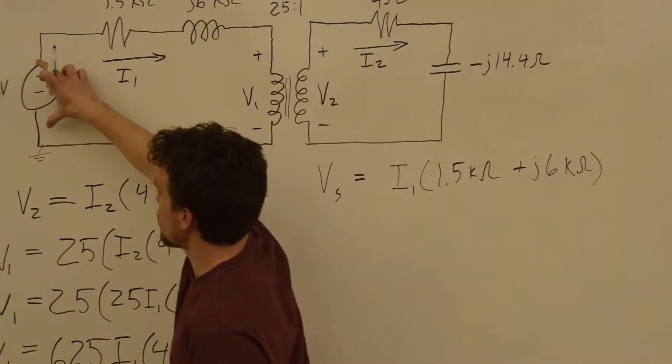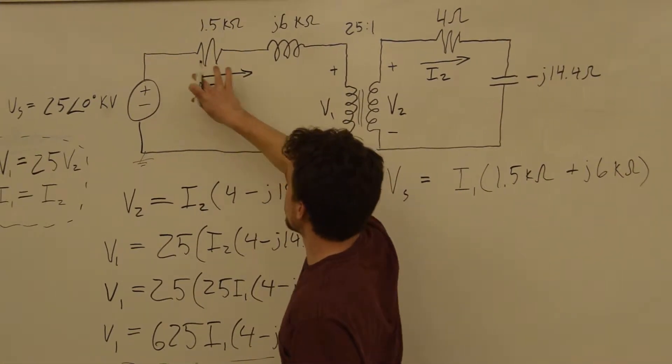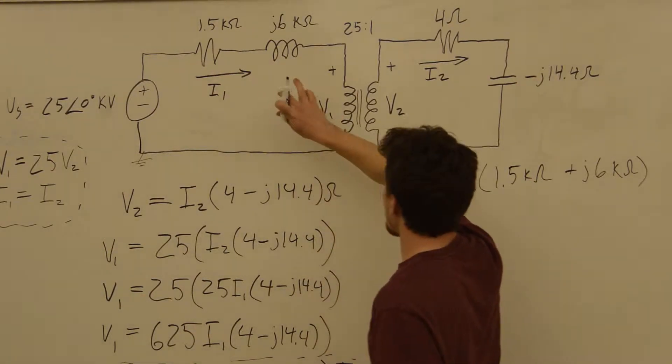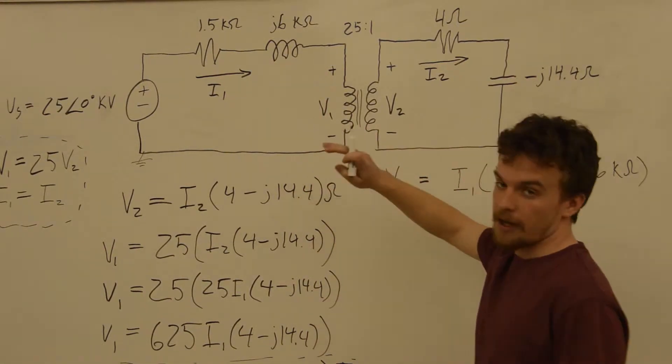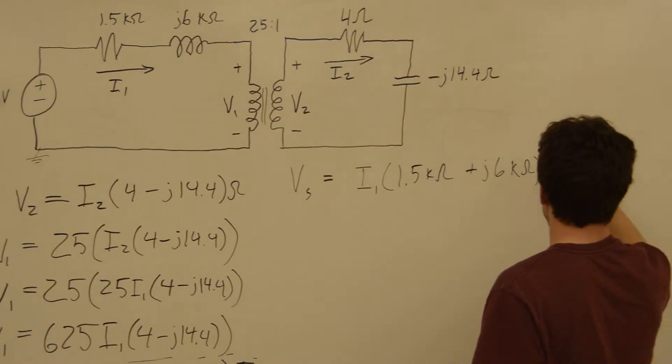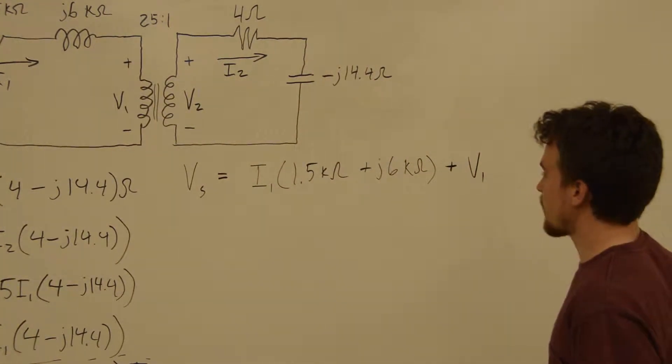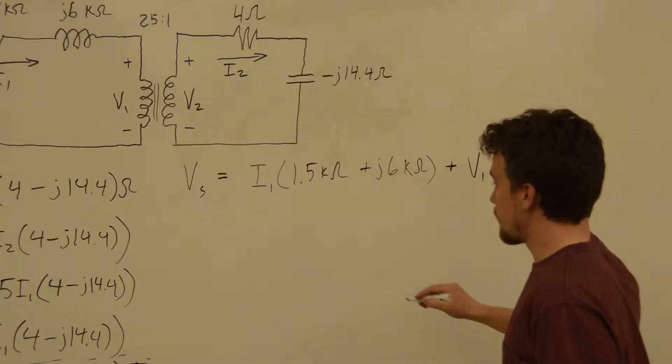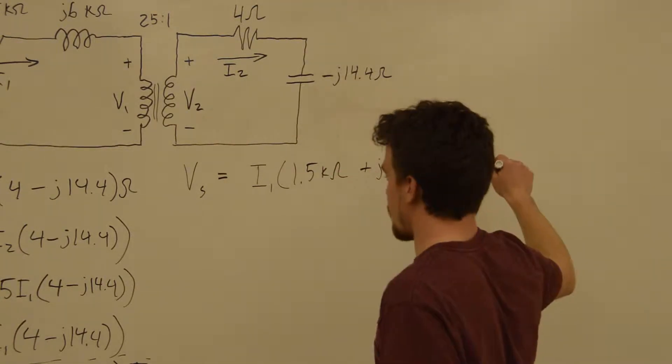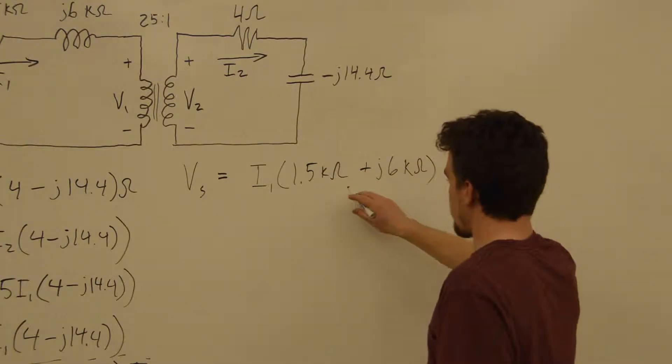So we said that Vs, the voltage across there, is equal to this voltage drop, this voltage drop, and then that's the last voltage drop in the loop. So we'll just say it's equal to that plus V1.